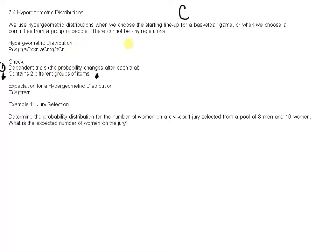Formally, there is an equation for the hypergeometric distribution. I'll write it out as you would see it: P(x) = aCx times n minus a, Cr minus x, over nCr. And this is what it would be.